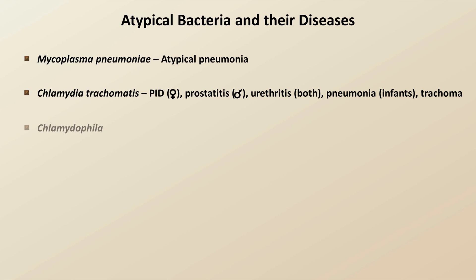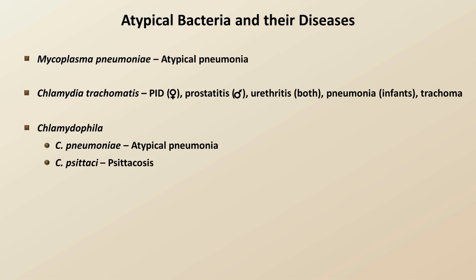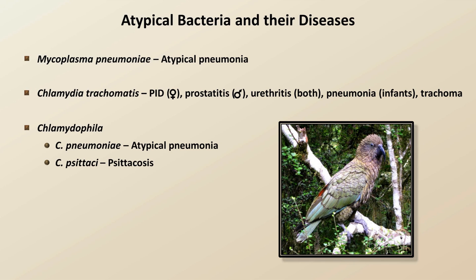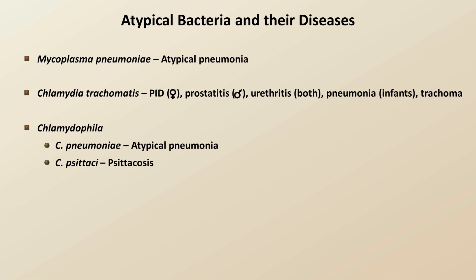The genus Chlamydophila has two main pathogenic species: C. pneumoniae, which as its name suggests causes atypical pneumonia, and C. psittaci, which causes psittacosis — a systemic illness presenting with fevers, rigors, myalgias, and dry cough — and which is transmitted by inhalation of organisms in dried bird feces. Chlamydia and Chlamydophila had been considered to be one genus until a proposal in 1999 divided them into two, which is now the generally accepted taxonomy.